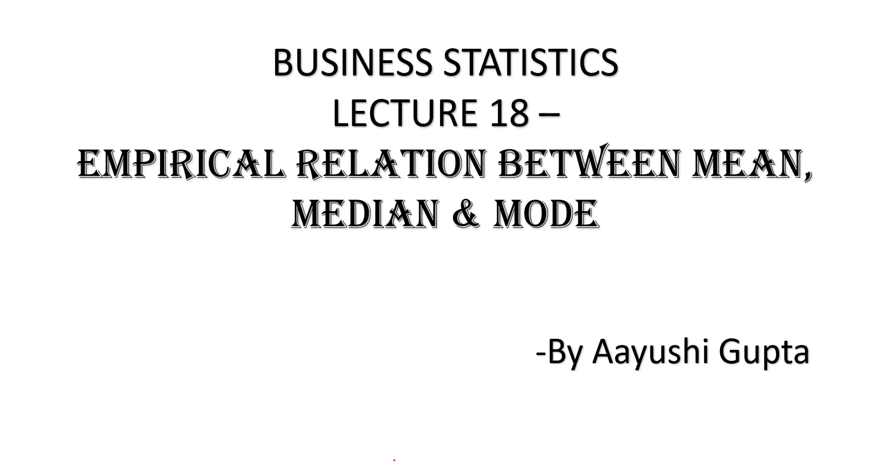Today we will talk about the empirical relation between mean, median, and mode. This is not always exact — it is a very generalized result. Empirical means we are simply saying this is a relation that has been found using various kinds of data. It will approximately justify this relation, but you can't say that these are exact answers. It's just an empirical relation found through different experiments giving a generalized result.